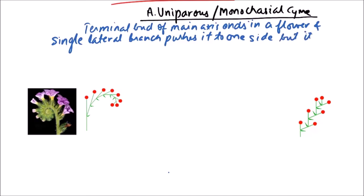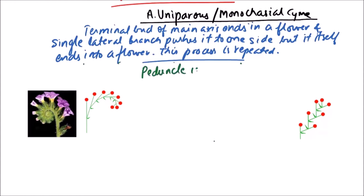But it itself ends into a flower. However, this process is repeated. Peduncle is sympodial as it is formed by the fusion of basis of axillary branches and the main axis.